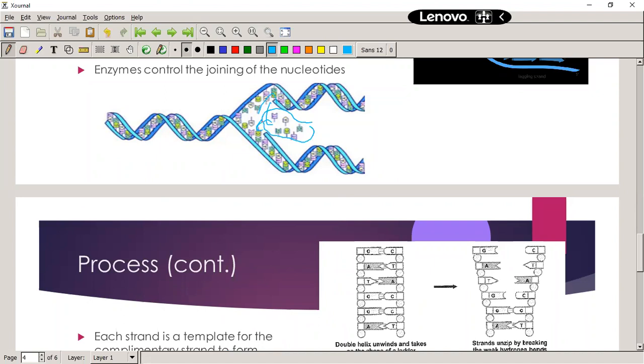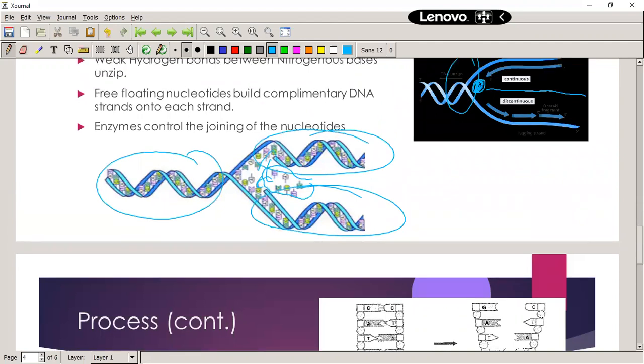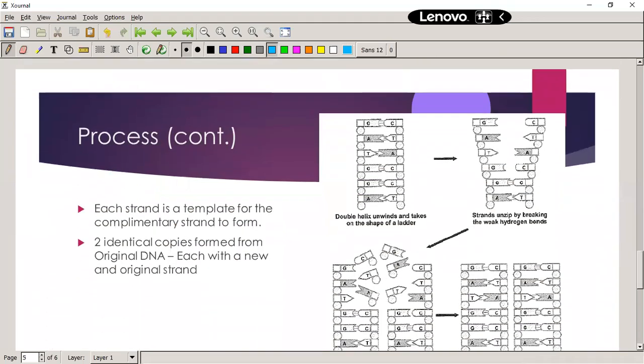They attach themselves and form two new strings. So from one string, we now have two strings that are identical to the first string because of the complementary pairing of adenine and thymine and guanine and cytosine, or A and T and C and G. And you don't need to know the enzymes controlling this process. All you need to know is that there are enzymes that are controlling this process.